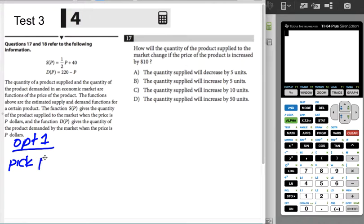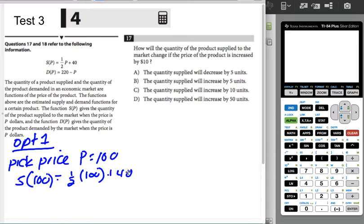So pick a price and say, if P was $100, what's the supply for $100? Well, that would be one half of 100 plus 40, so that would be 50 plus 40, which is 90.